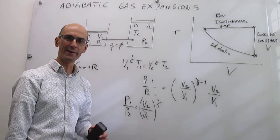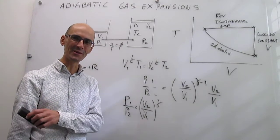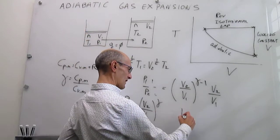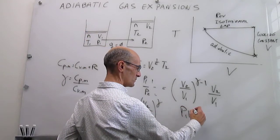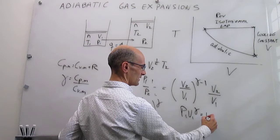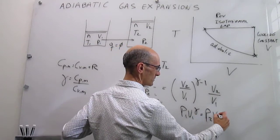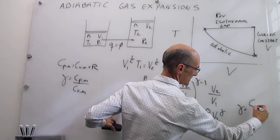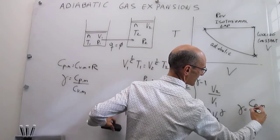This sets up our final expression for the relationship of the initial pressures and volumes and the final pressures and volumes. You're going to have P1 V1 to the gamma is going to be equal to P2 V2 to the gamma, where gamma is just the ratio of heat capacities of that ideal gas.